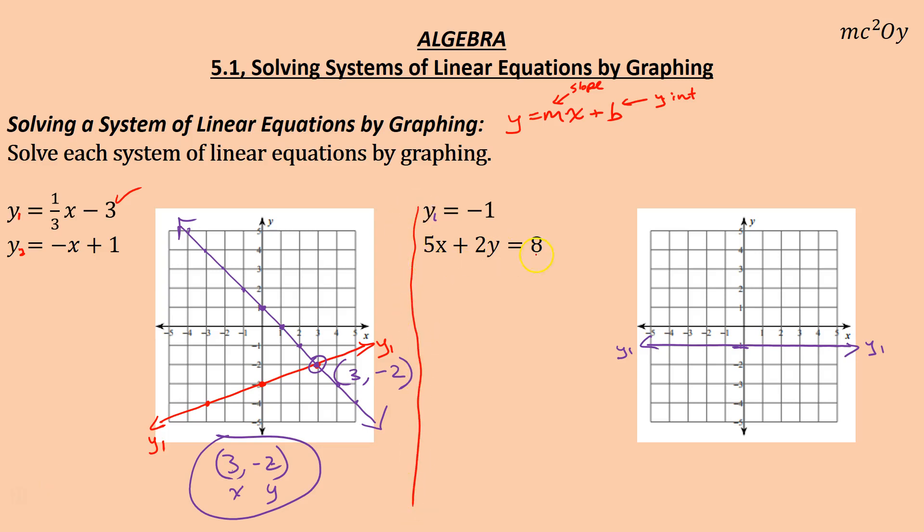And this one I'm going to go ahead and put in slope intercept form because xy intercept form doesn't work well here. So I'm going to subtract 5x over. So I get 2y is equal to negative 5x plus 8. And then we'll divide by that 2. So we get y is equal to negative 5 over 2. And then make sure to divide by the 8 by the 2 as well.